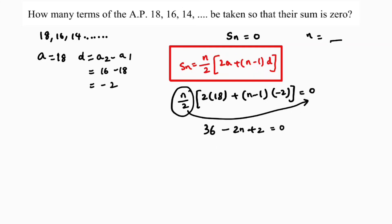36 plus 2 is 38 minus 2N. If I transpose this N by 2, it will become 0 by N by 2, that is nothing but 0. If I transpose minus 2N, it will become plus 2N.